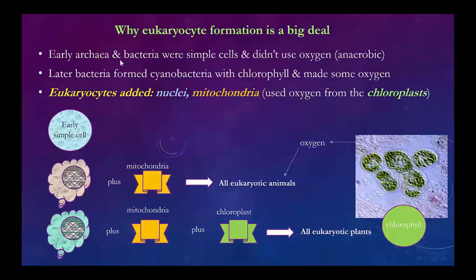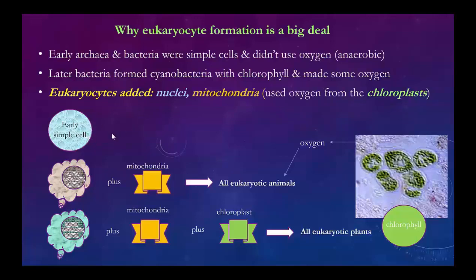The early archaea and bacteria were simple cells that didn't use oxygen — they had anaerobic metabolism. Later, bacteria formed a type called cyanobacteria. They started using chlorophyll and made some oxygen in the atmosphere, though cyanobacteria didn't really need the oxygen. Then at about one billion years, the eukaryocytes came along. They added nuclei for the first time, nuclear DNA, mitochondria with their own DNA, and chloroplasts.